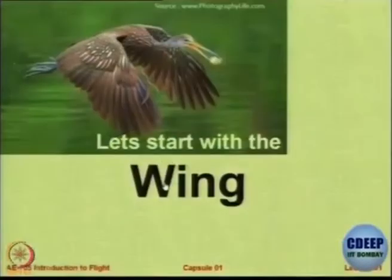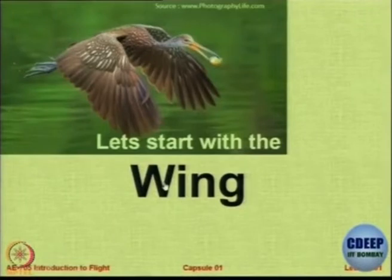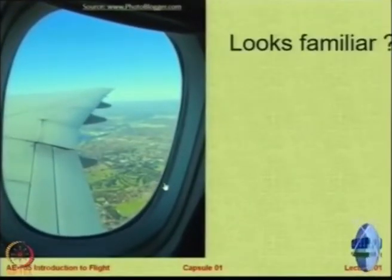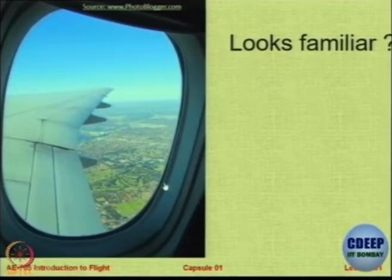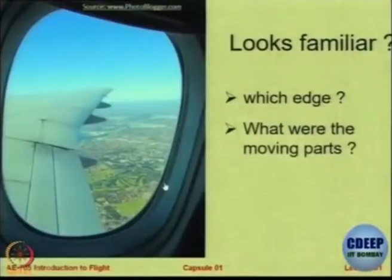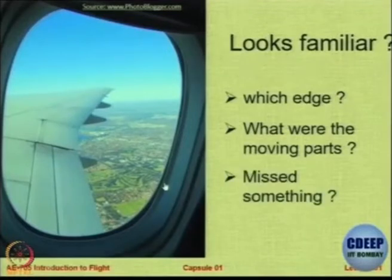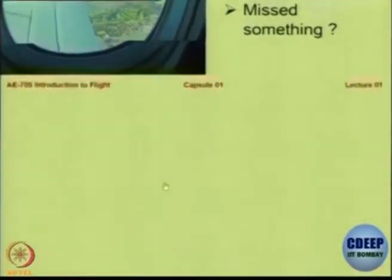The first component of the aircraft I want to discuss is the wing, which is the major component — without the wing it is very difficult to have an aircraft. Here is a photograph of the wing as seen from a window, and you can see that the wing is not just one single piece; it contains several sub-assemblies. We will see which parts of the wing move and which parts remain stationary.